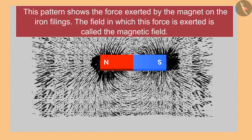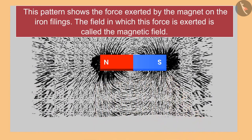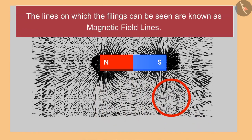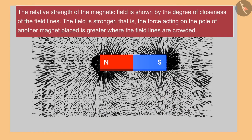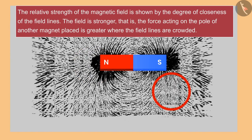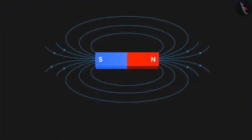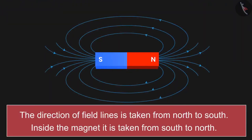This pattern shows the force exerted by the magnet on the iron filings. The field in which the force is exerted is called the magnetic field. The lines on which the filings can be seen are known as magnetic field lines. The collection of iron filings represents the strength or weakness of the magnetic field. According to convention, the direction of field lines is taken from north to south outside the magnet, and from south to north inside the magnet.